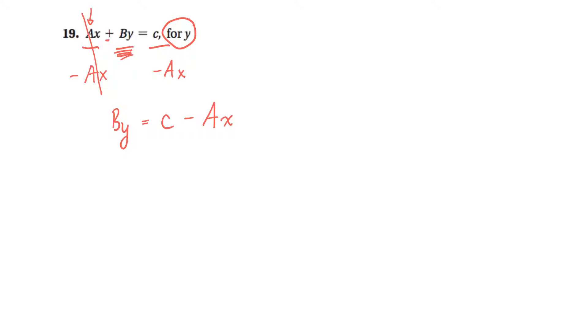Okay, now all I want is a y. I don't want a by, so I have to get rid of this b. Since it's being multiplied by y, then I'm going to divide both sides by b. So divide this side, this side, and this side, or all the terms by b. So it'll be y is equal to c over b minus ax over b.